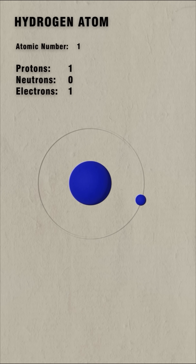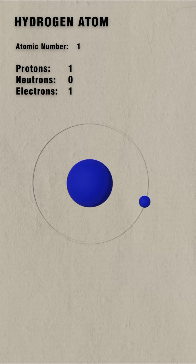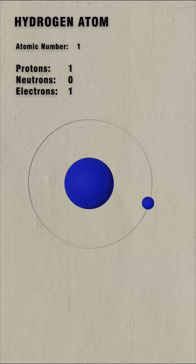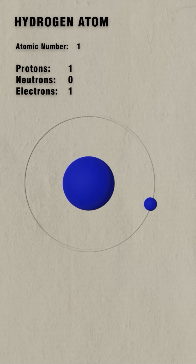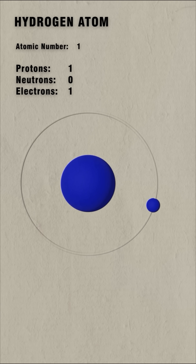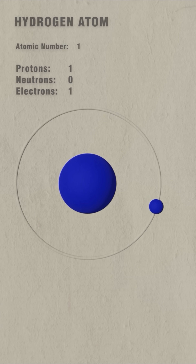The hydrogen atom is the simplest and most fundamental atom of them all, consisting of a single proton and a single electron. It is the most common element in the universe, making up roughly 75% of all visible matter.